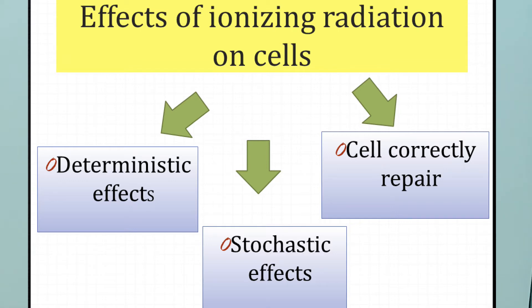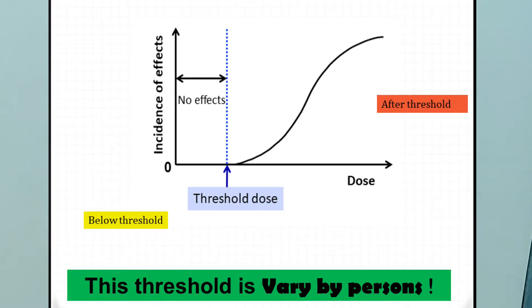The effects of ionizing radiation on cells include deterministic effects and stochastic effects. The deterministic effect, also known as the non-stochastic effect, depends on the time of exposure, the dose, and the type of radiation. It has a threshold dose: below this threshold, the probability of harming an organ or tissue is considered small or zero. But above this threshold, the probability increases rapidly with dose, and the severity of harm is related to the dose.